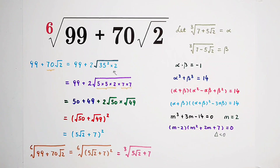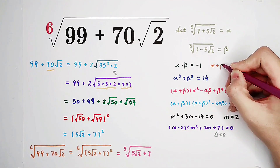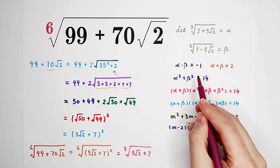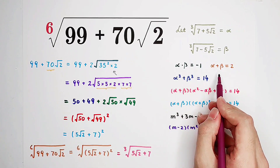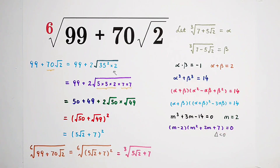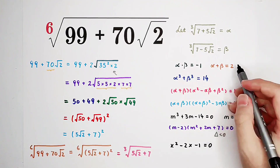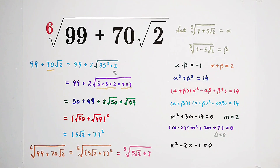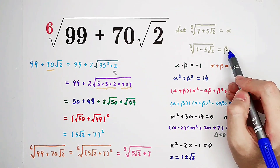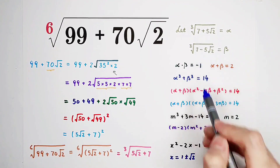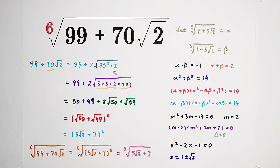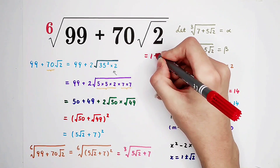Because m is alpha plus beta, so alpha plus beta equals 2. And we also have alpha times beta equals negative 1 — so we have the sum and product. According to Vieta's theorem, alpha and beta are two solutions of the equation x squared minus 2x minus 1 equals 0, because negative b over a is 2 and c over a is negative 1. Now I actually get two values: x equals 1 plus or minus square root of 2. However, we know that alpha is greater than beta because alpha has plus and beta has minus. So alpha is the bigger value, 1 plus square root of 2. That means our answer is 1 plus square root of 2.